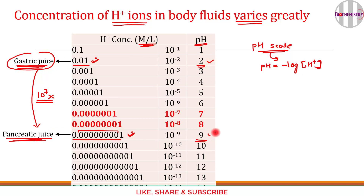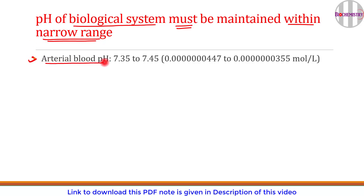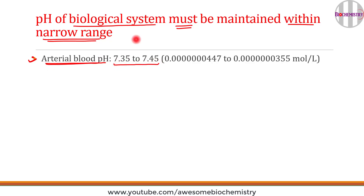The numbers 2 and 9 are very easy to remember and interpret. The pH of biological systems must be maintained within a narrow range. Clinically, arterial blood pH is very important for diagnosing diseases and determining prognosis. The normal reference range for arterial blood pH is 7.35 to 7.45.